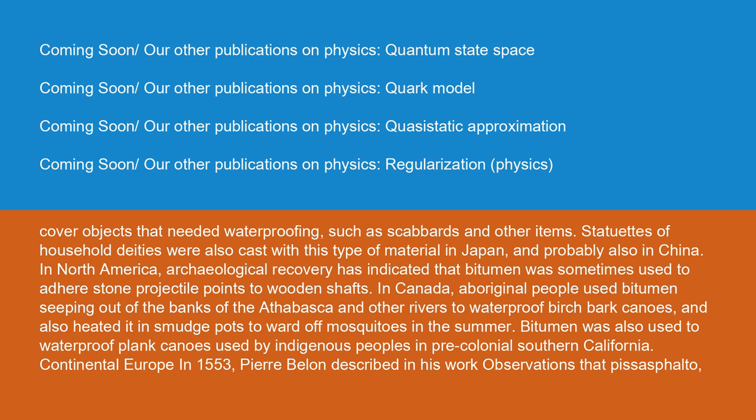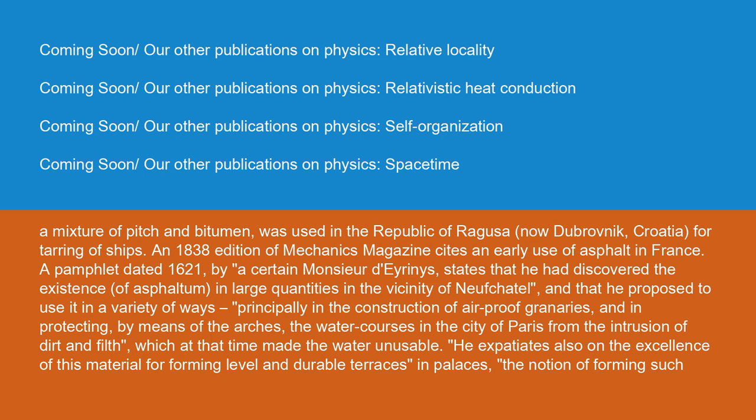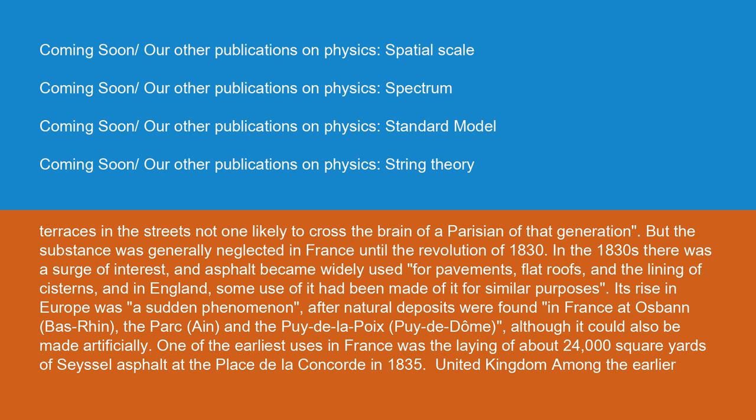In continental Europe, in 1553, Pierre Belon described that a mixture of pitch and bitumen was used in the Republic of Ragusa — now Dubrovnik, Croatia — for tarring of ships. An 1838 edition of Mechanics Magazine cites an early use of asphalt in France. A pamphlet dated 1621 by a Monsieur Derenice states that he had discovered asphaltum in large quantities near Neuchâtel, proposing to use it for constructing airtight granaries and protecting water courses in Paris. He also noted the excellence of this material for forming level and durable terraces. But the substance was generally neglected in France until the Revolution of 1830.